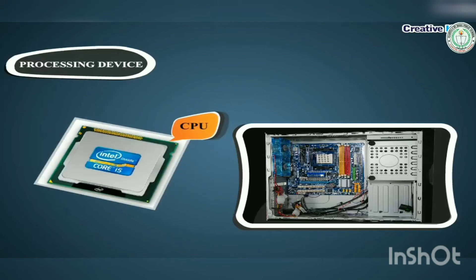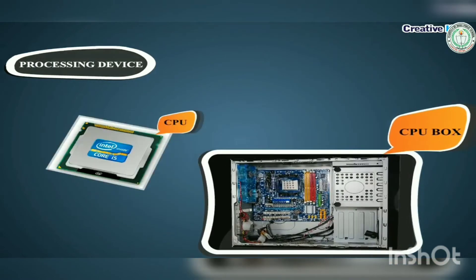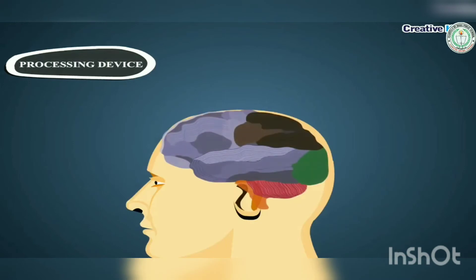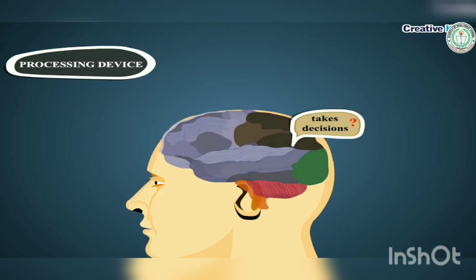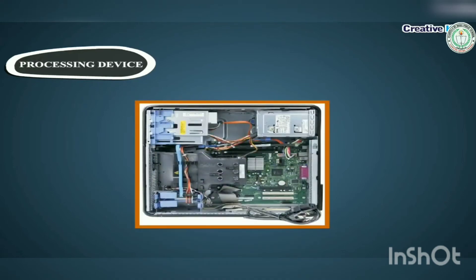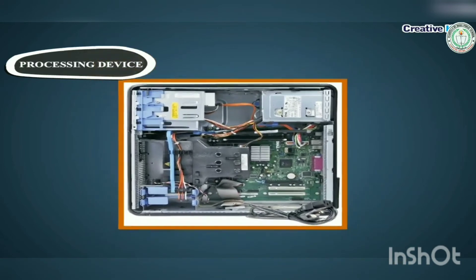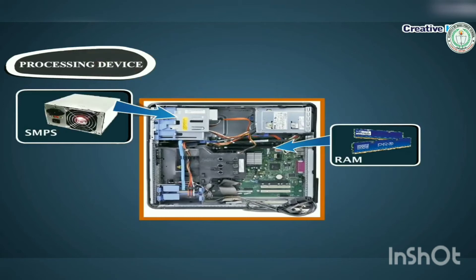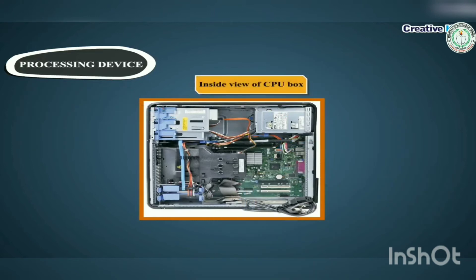Processing devices: The processing unit of a computer is the Central Processing Unit, or CPU. The CPU is present in the CPU box and does all the calculations of the computer. The CPU is known as the brain of the computer — just as your brain remembers things, takes decisions, and does calculations. The computer does all its work through the CPU. The inside of the CPU box contains components such as the microprocessor, SMPS, RAM, motherboard, and hard disk drive.